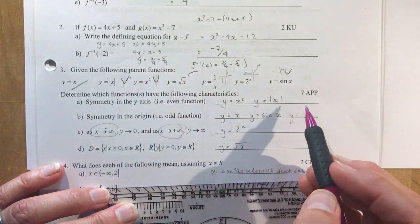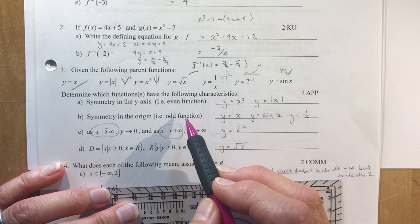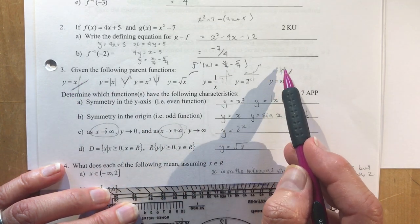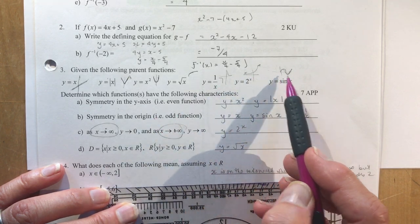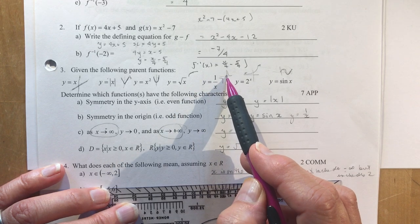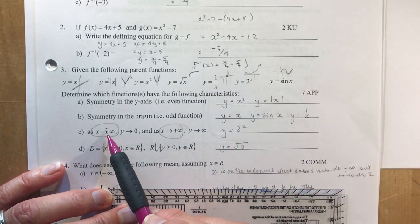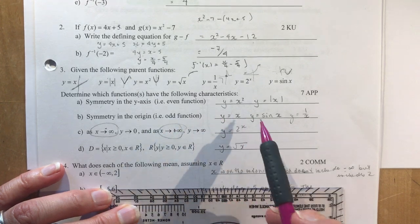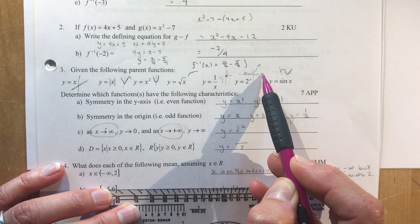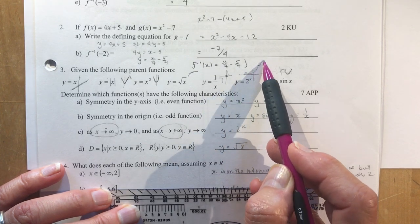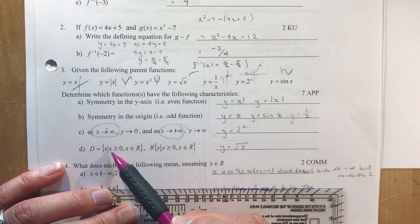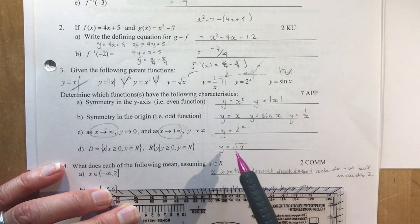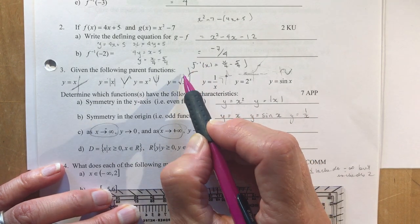So symmetry in the y axis, i.e. even functions. Now the only two there would be x squared and absolute value x, right? Symmetry of even symmetry. So what's on this side is also on this side pretty much. Symmetry in the origin, an odd function. So that would be here. Let's put a y-axis on it so you can flip that around. Sine x, you could rotate this as well. Symmetry in the origin. Okay, so remember that means about the origin.